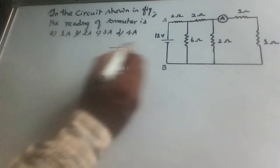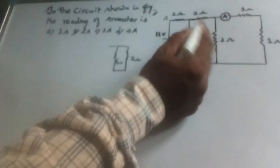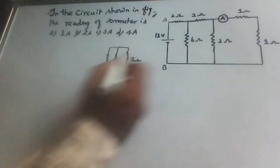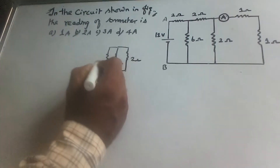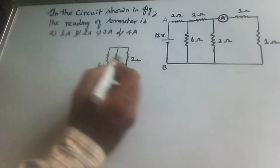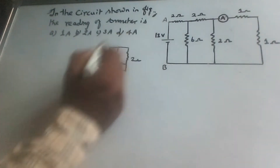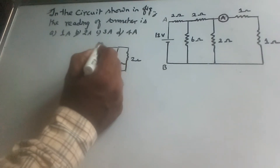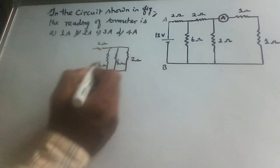These two combinations, 2 ohm and 4 ohm, are in parallel with this 6 ohm resistor, and this combination is in series with the 2 ohm resistor.